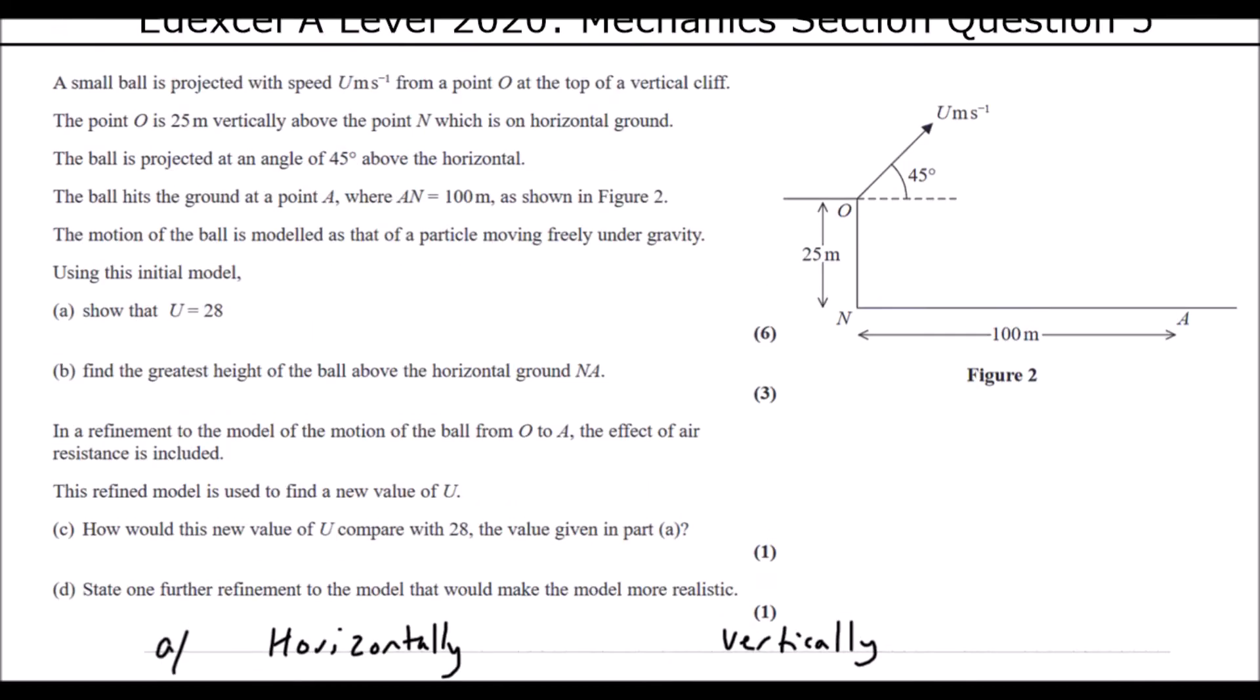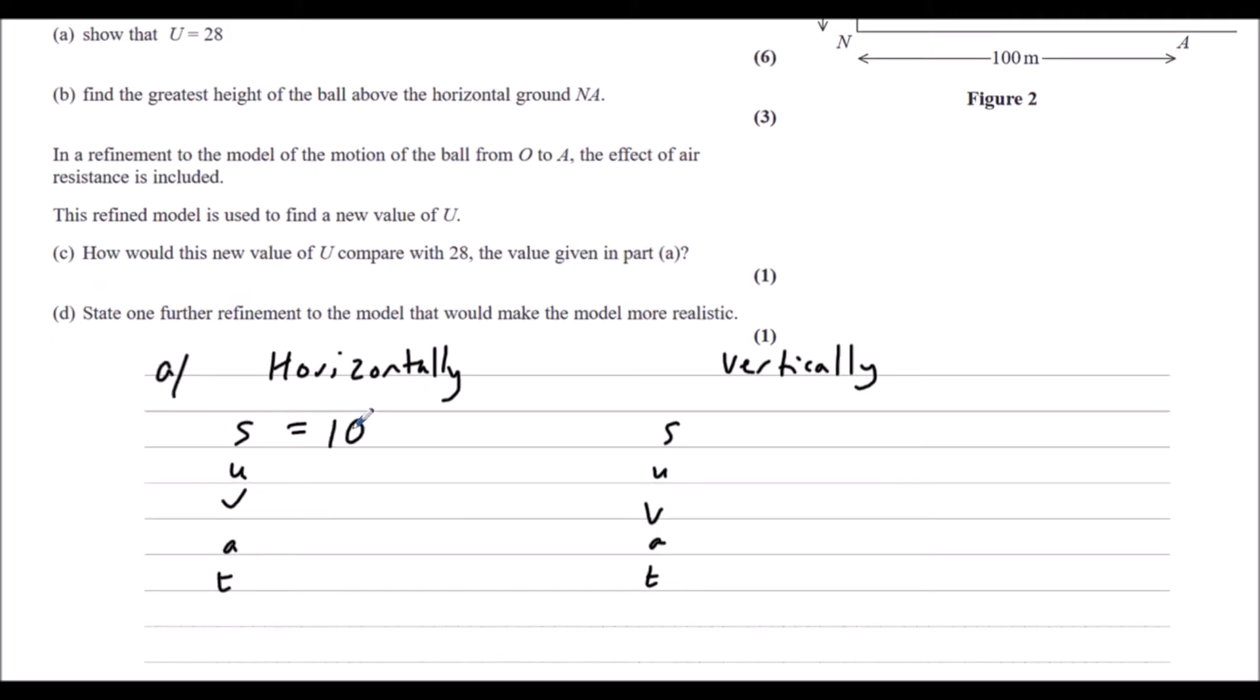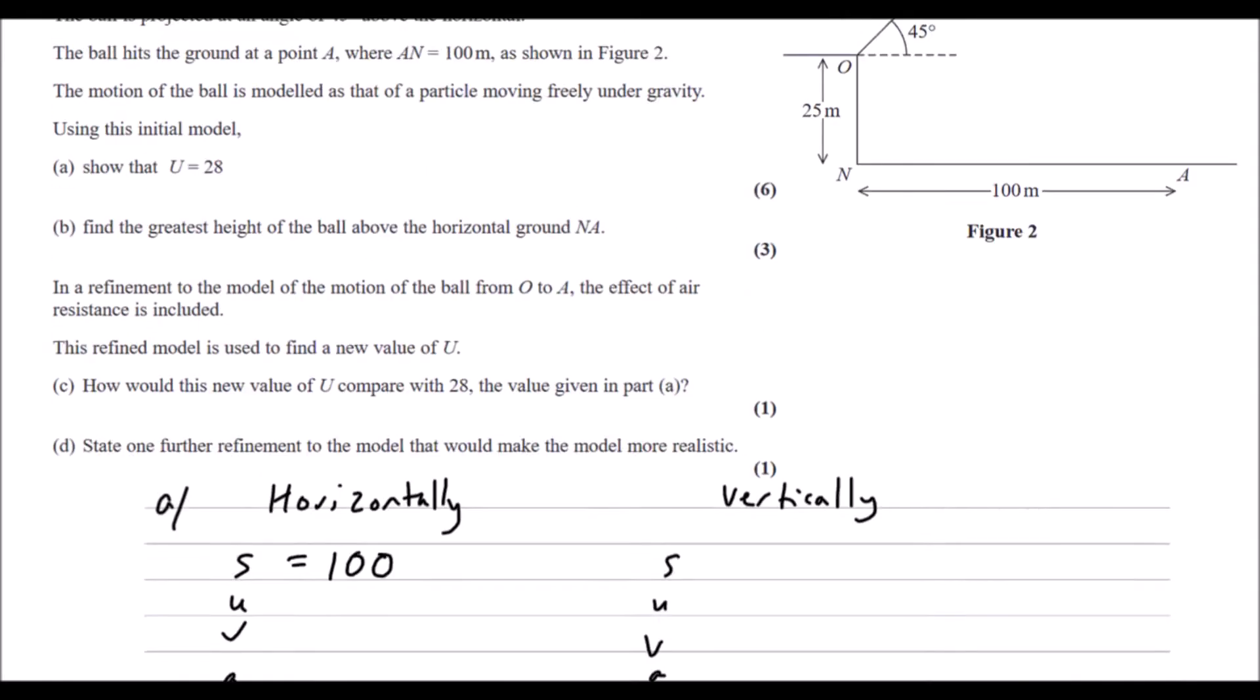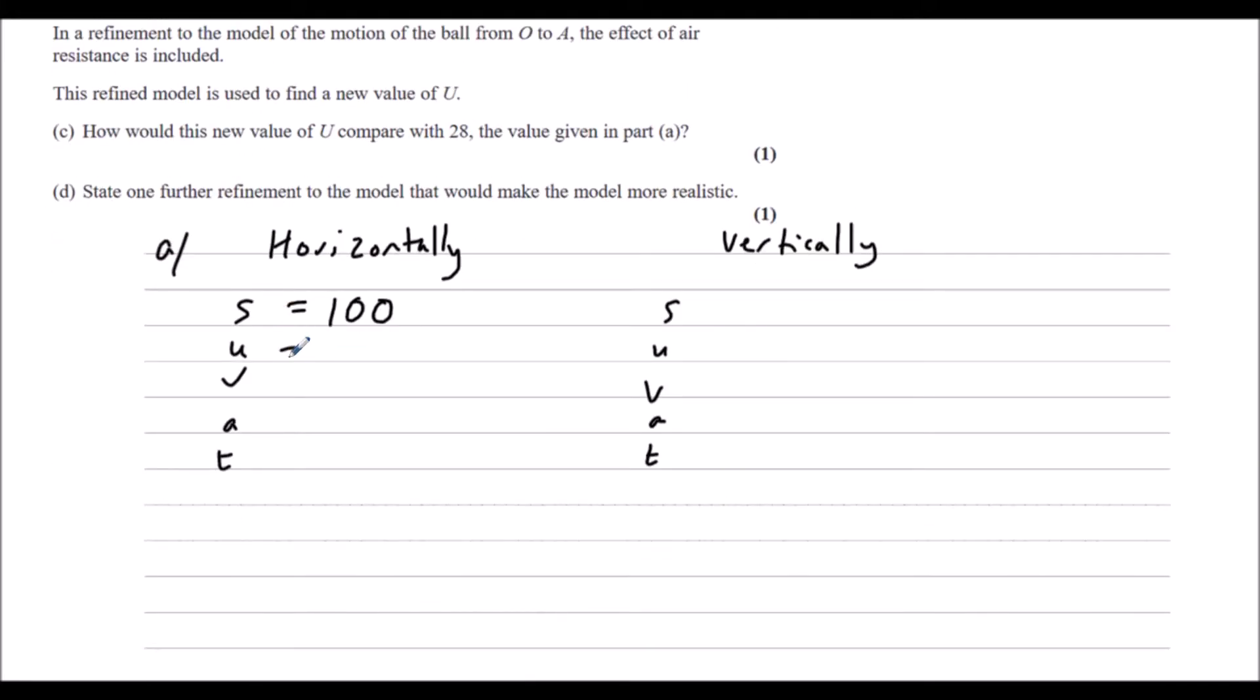So horizontally, we have 100 meters traveled, so displacement of 100. The initial speed is u cos 45. It's not accelerating, acceleration is zero. So we can also say V is u cos 45. And we don't know the time.